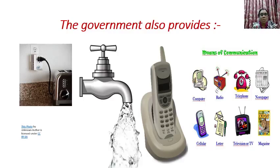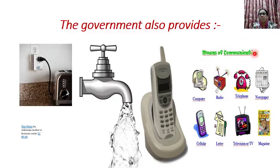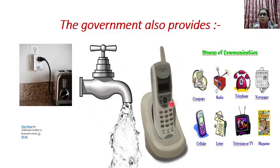Government also provides all these facilities, such as supply of electricity, supply of water, telephone services, and means of communication — like computers, radio, telephone, newspapers, cellular, letters, television, magazines, etc. All these are provided by the government. Government takes the responsibility to provide all these amenities and facilities.